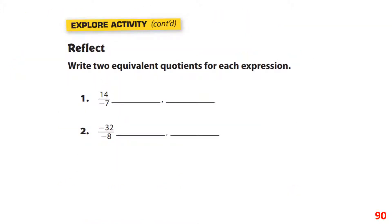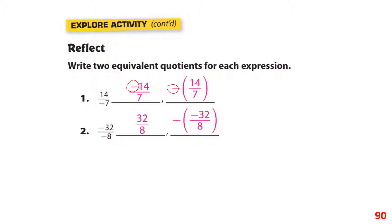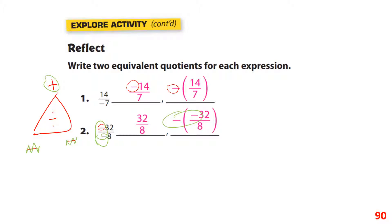To write two equivalent quotients, you can put the negative in the numerator or in front — that's the main point. And if we have two negatives, using the Xero triangle for division: negative divided by negative is positive. If I cover one negative and the other negative, the answer is positive. So with two negatives, the result is always positive.